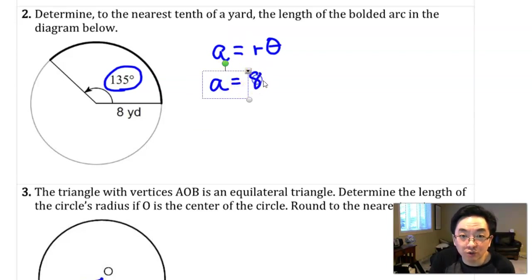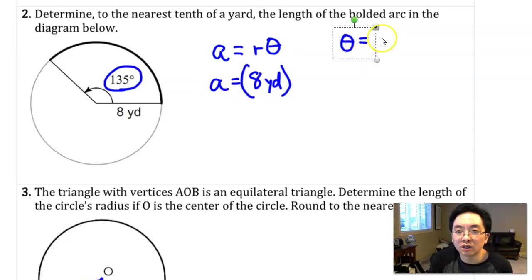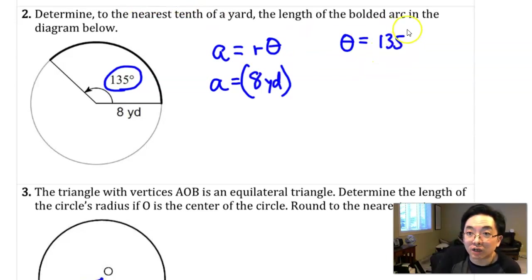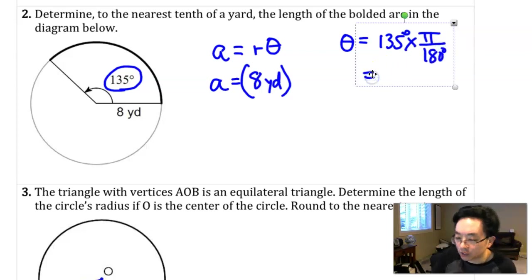I can start with a equals the radius is 8 yards times theta. But don't put in 135 degrees for theta. Let's do a quick calculation. Theta equals 135 degrees, but to convert that into radians, we need to multiply by pi over 180. I end up with 2.36 radians, and that's rounded.